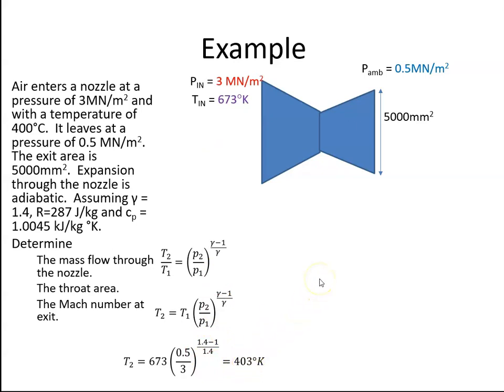Once we have the temperature, we can calculate the velocity. So Cₚ, I've converted to joules from the given kilojoules per kilogram. T₁ is 673, T₂ here was 403, and that works out to be 736 m/s.